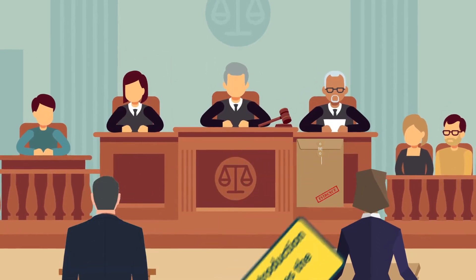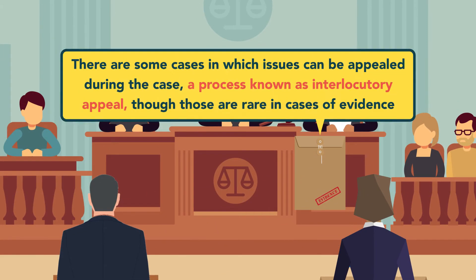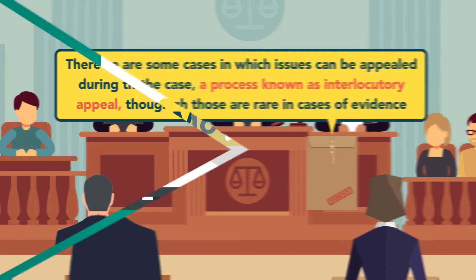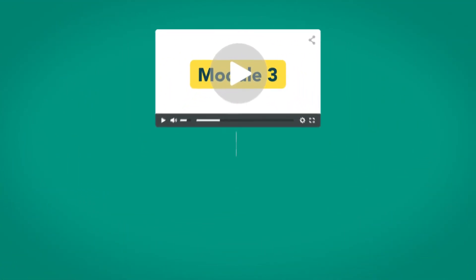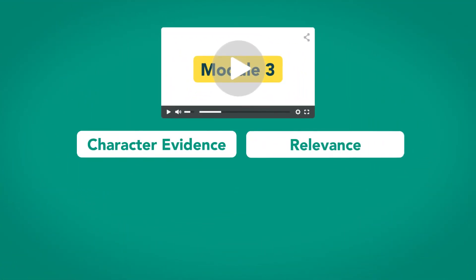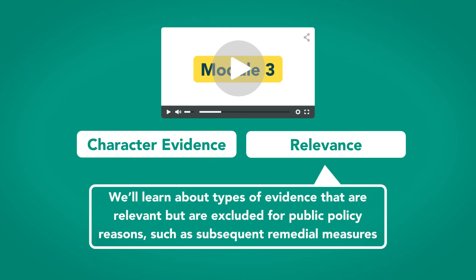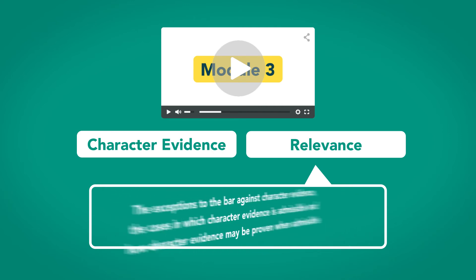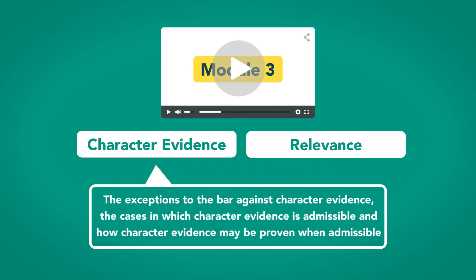As discussed in the first module, there are some cases in which issues can be appealed during the case, a process known as interlocutory appeal, though those are rare in cases of evidence. In our next module, we'll continue our study of character evidence and relevance. We'll learn about types of evidence that are relevant but are excluded for public policy reasons, such as subsequent remedial measures. We'll also learn about the exceptions to the bar against character evidence, the cases in which character evidence is admissible, and how character evidence may be proven when admissible.